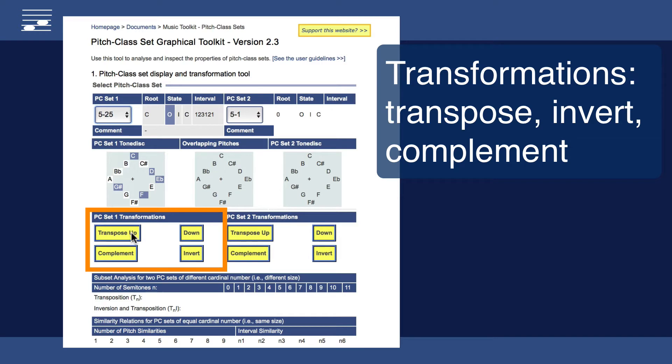Four buttons enable set transformations. Transpose up leads to a clockwise pitch rotation. Transpose down is rotation in the opposite direction.